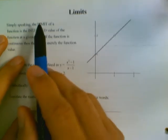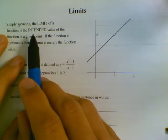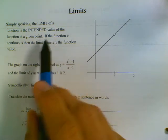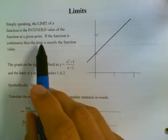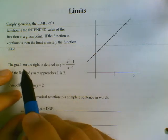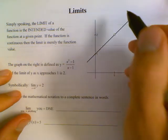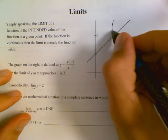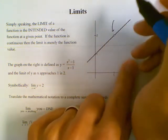Simply speaking, the limit of a function is the intended value of the function at a given point. So if the function is continuous, then the limit is just the function value, but sometimes we have a function that's not continuous, like this one that we see on the right.